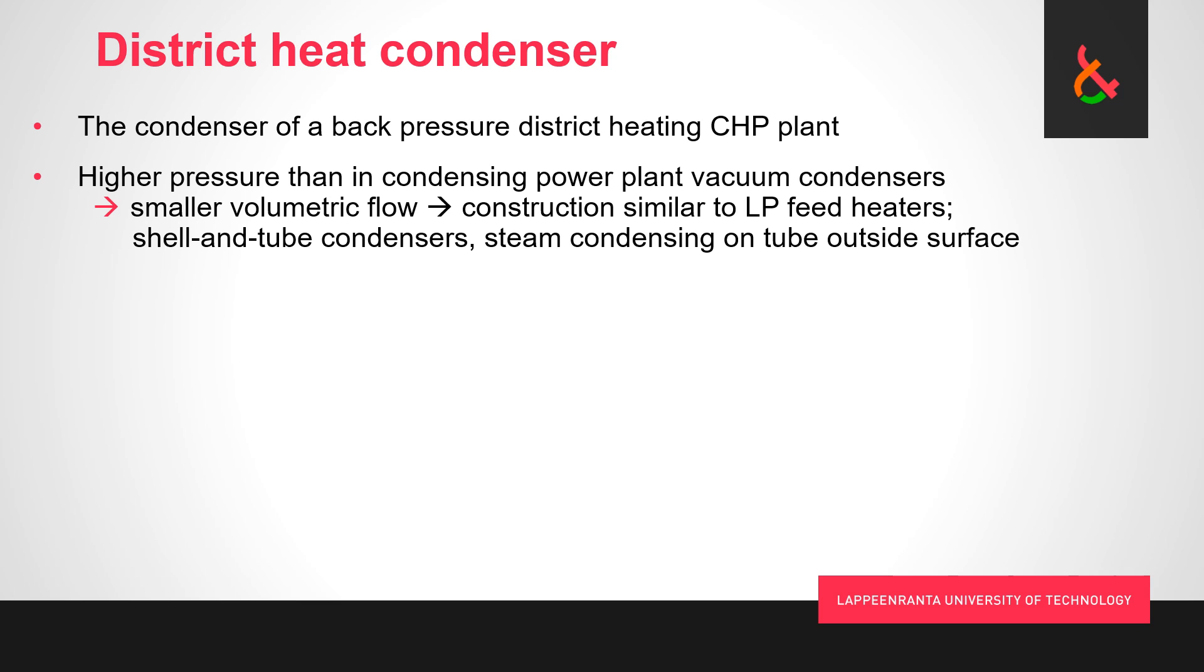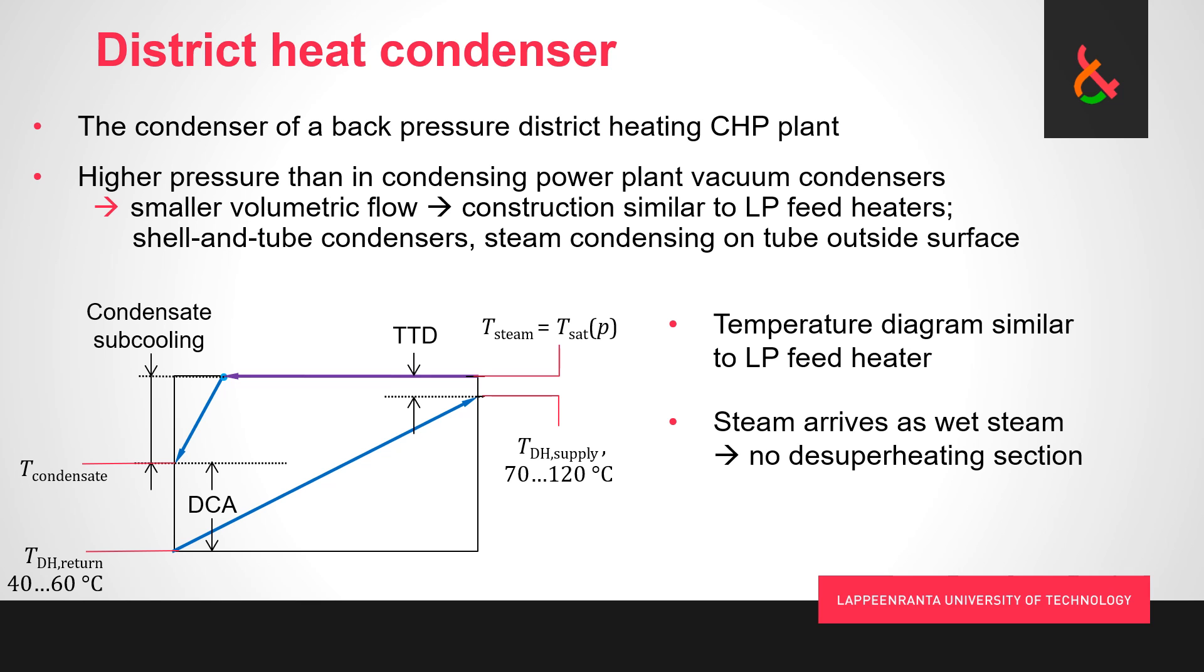We always want to draw the temperature diagram, so this is more or less how it looks. Same idea as with a condensing power plant vacuum condenser. We always get steam in wet steam state, so no desuperheating. Fairly low TTDs—we're talking about maybe 2, 3, 4 degrees Celsius typically.